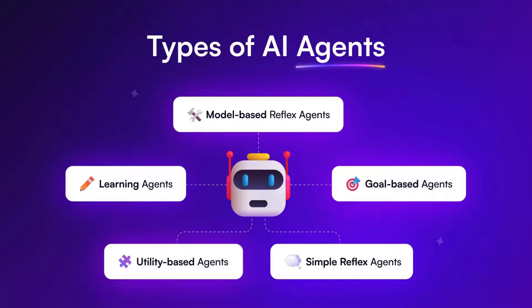Goal-based agents take it further by acting to achieve specific objectives, evaluating the success of their actions based on those goals. Lastly, utility-based agents consider multiple possible outcomes and choose actions that maximize their satisfaction or utility. Understanding these types helps in designing more effective AI systems.